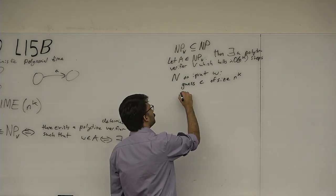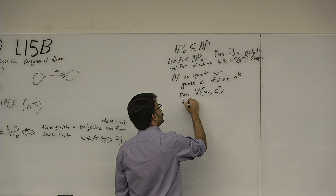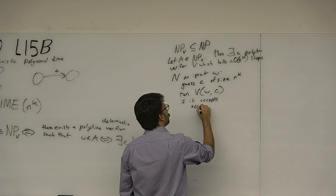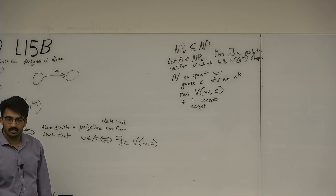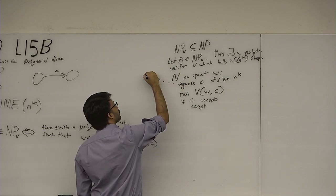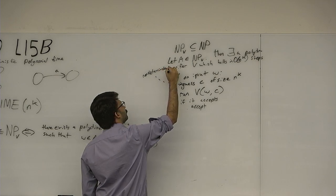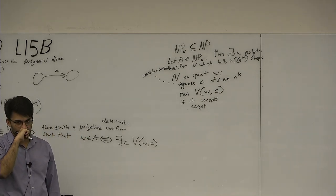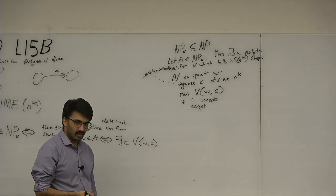The algorithm N on input W: non-deterministically guess the certificate C of size no more than n^k — because the verifier runs in polynomial time, it can't look at a certificate larger than polynomial. Then run V on input W and certificate C; if it accepts, accept. This is clearly a non-deterministic algorithm because we're non-deterministically guessing C. You've guessed the solution and that means you've solved the problem.